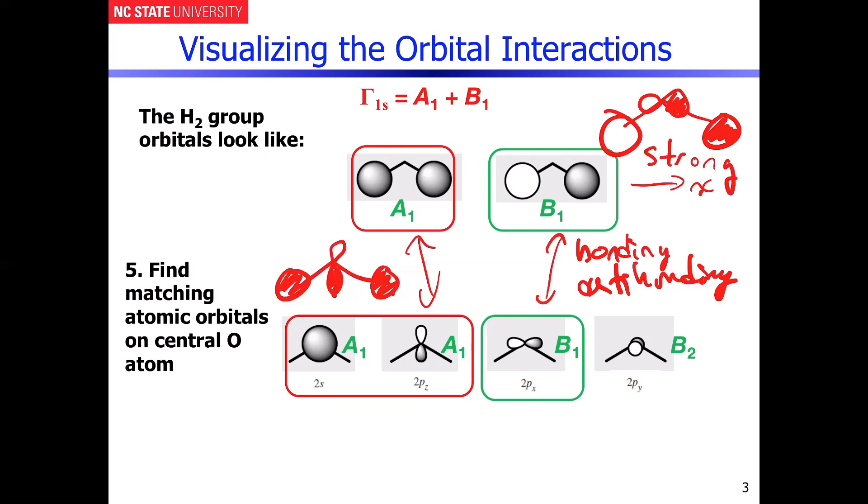So the net result of this is that this interaction is actually weaker with respect to the one that's occurring in the B1 interaction. So energetically, what that's going to end up looking like is the B1 combination is going to be more energetically stable than the A1 bonding combination.